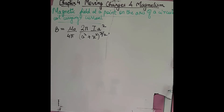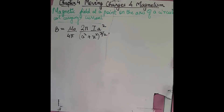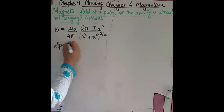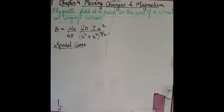So the magnetic field at a point on the axis of a circular coil carrying current is given by B = (μ₀/4π) · (2πIA²) / (A² + X²)^(3/2), where I is the current flowing in the coil, A is the radius of the coil, and X is the distance of point P from the center of the coil. Now let's consider some special cases.